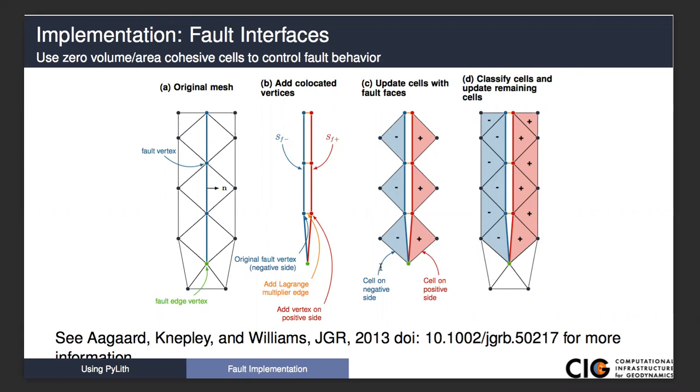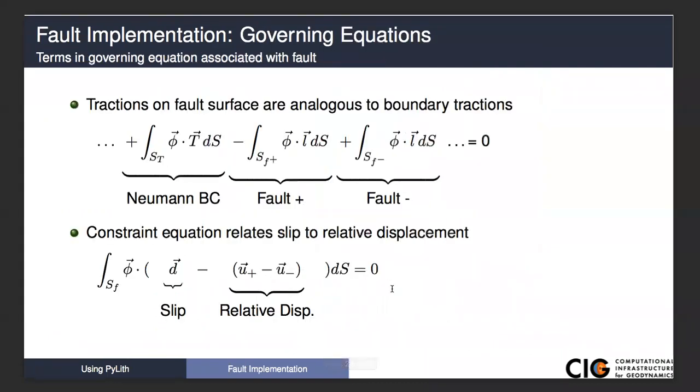This is discussed in a GJI paper that was published in 2013. You can see that for more information or ask. It's also discussed quite a bit in the manual. On that fault interface, we have equal and opposite tractions. We use Lagrange multipliers for that. On the positive side of the fault, we have a negative term. On the negative side of the fault, we have a positive term. That's because they're equal and opposite. It looks much like a Neumann traction boundary condition that we have on our exterior boundary.